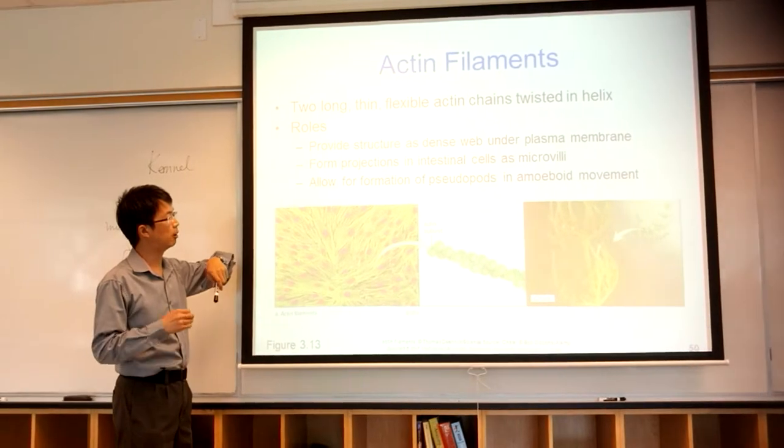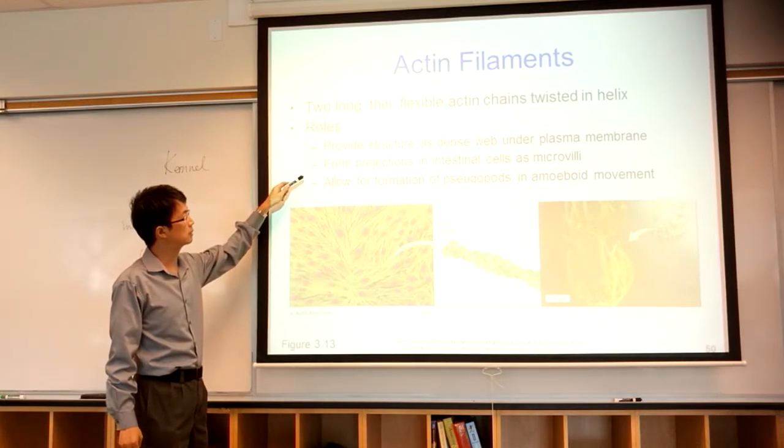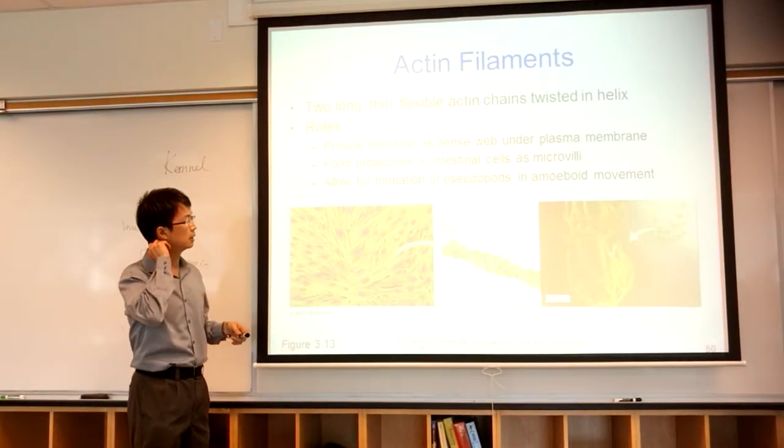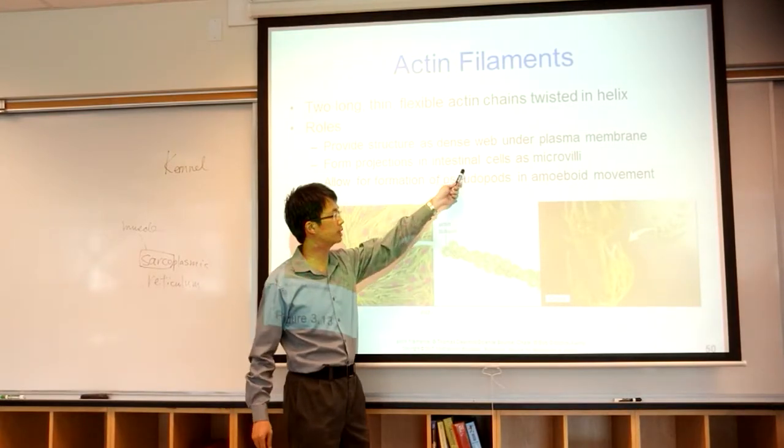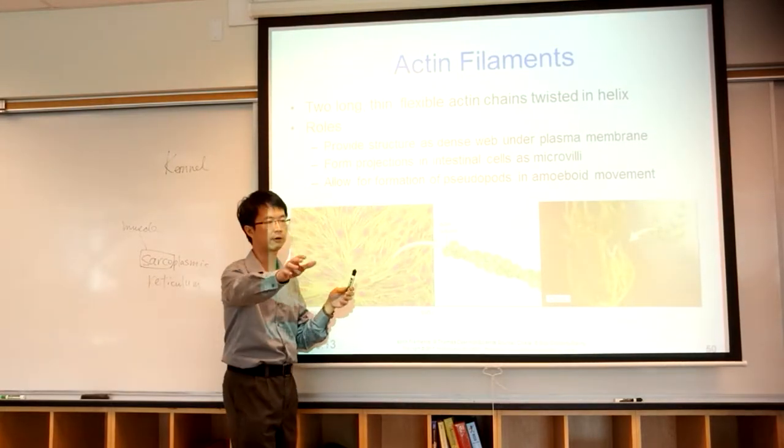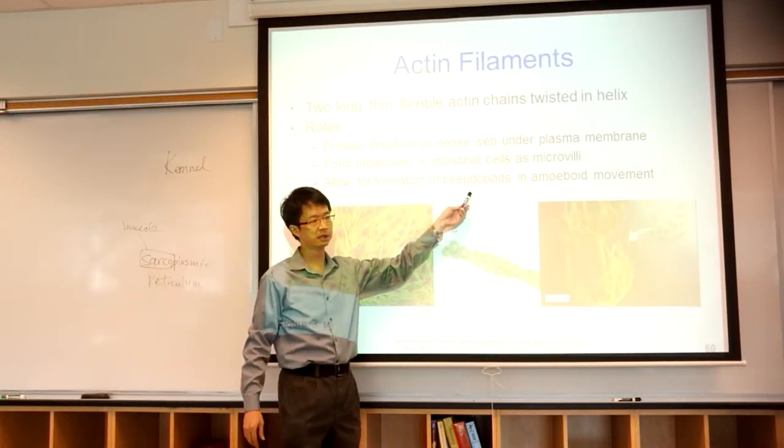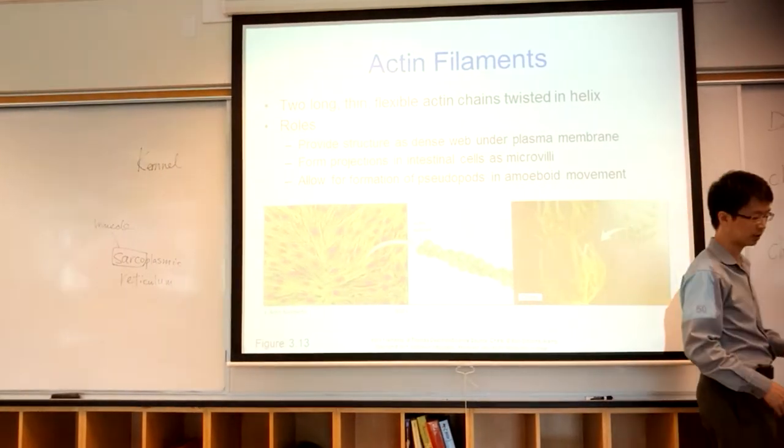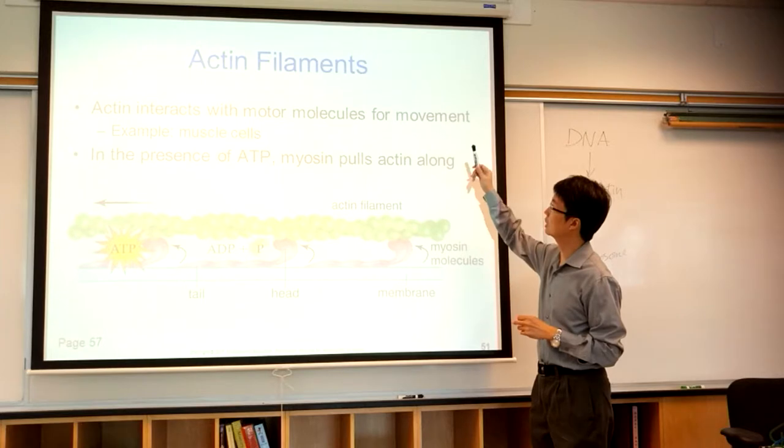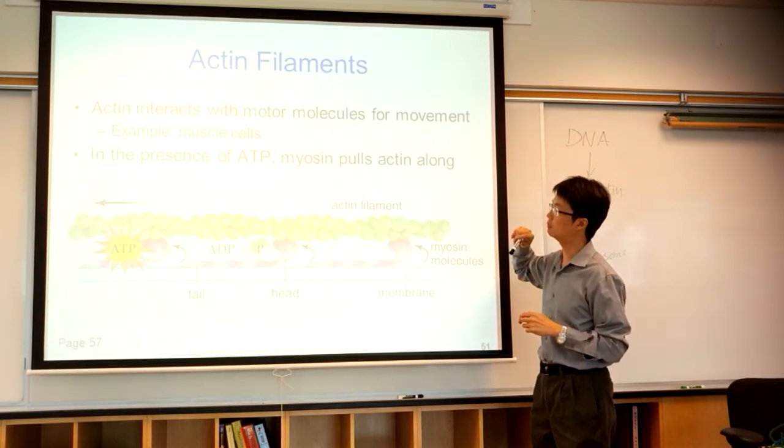Actin filament. They are the smallest or the thinnest one. They make something called microvilli. They make microvilli in the intestine. They also form the pseudopod. Pseudo means fake, pod means foot or feet. So amoeba, we know that amoeba can move around. They can extend their cell into like a fake feet because of pseudopod. This is how amoeba move. So actin is the smallest one, the thinnest one. You can see actin from a muscle. That's why we call actin filament, aka thin filament.